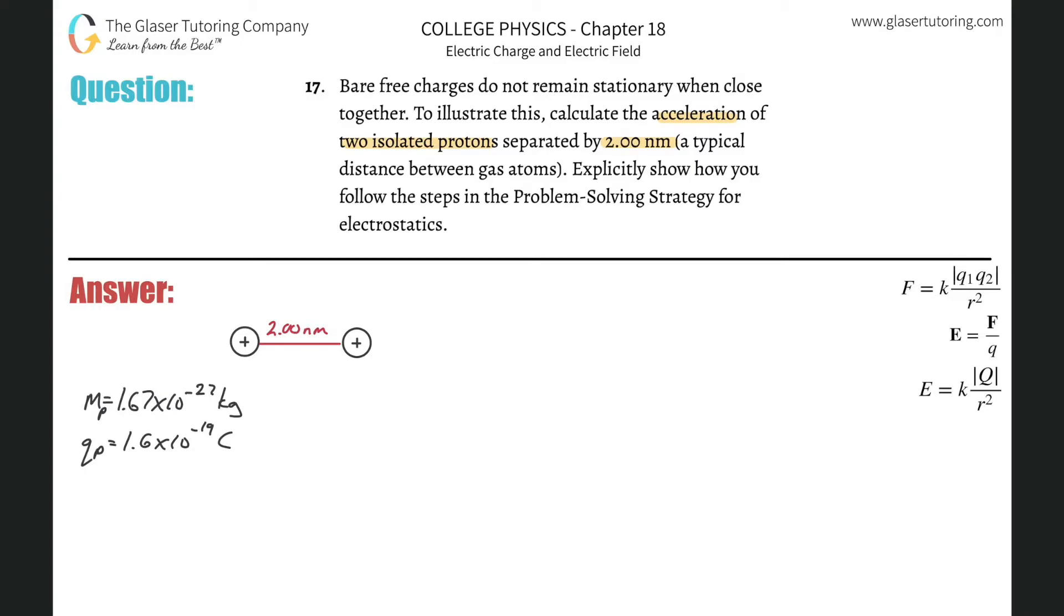We need to know a couple of things in order to solve this. You got to know the mass of the proton, it's about 1.67 times 10 to the minus 27 kilograms. It would be the same as the mass of a neutron. The mass of an electron is about 9.11 times 10 to the minus 31 kilograms. And the charge of a proton is about 1.6 times 10 to the minus 19 coulombs. So we got to know this in order to solve.